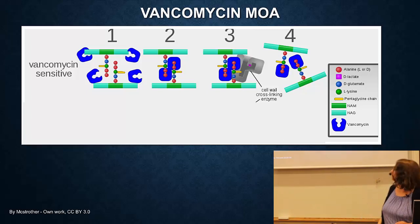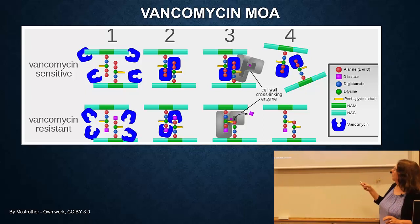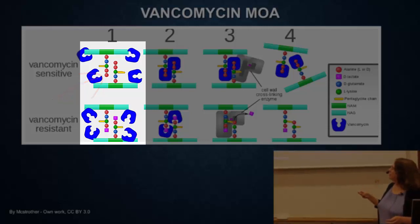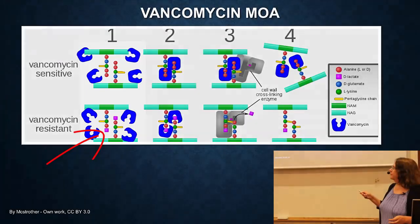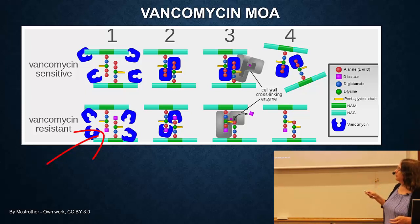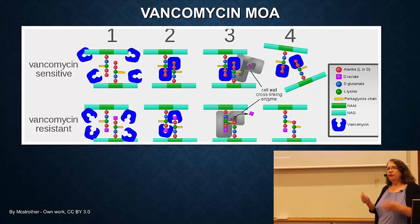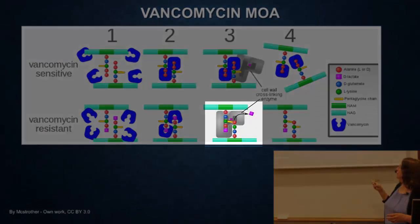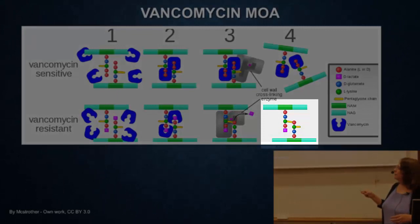Vancomycin resistance is very clever. Here's the peptide, and at the end is a little red ball - the red is alanine. In a vancomycin resistant cell, instead of putting alanine in that position it puts a different subunit called lactate. That means it's changed the target. Now vancomycin can kind of bind but not very well, so the cell wall cross-linking enzyme can fit in and do its job and make the cross-link. This cell is vancomycin resistant by changing the target.